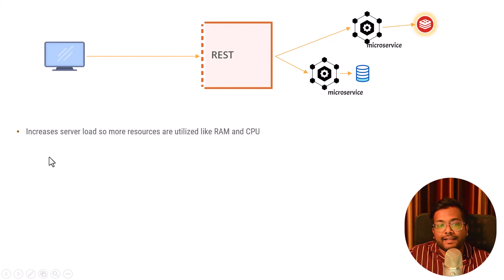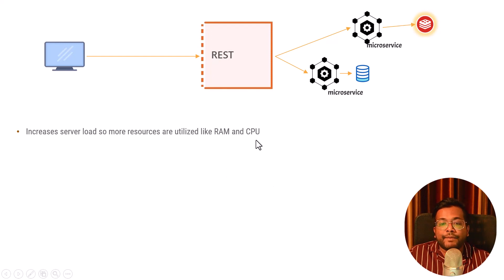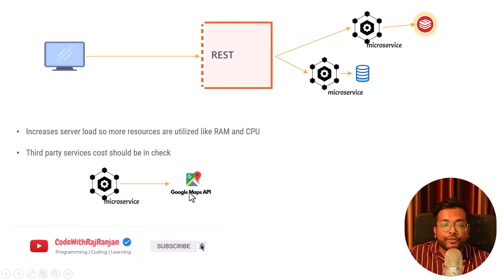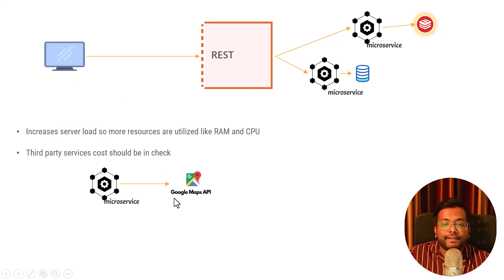If the request load is large, it increases server load, so more resources like RAM and CPU are utilized. On AWS or Google Compute Engine, this can increase RAM and CPU usage and ultimately increase your billing. Third-party service costs should also be kept in check. Consider Uber: their microservice calls the Google Maps API to find where a driver is and book a cab. Google Maps APIs are chargeable beyond a certain throughput, so more requests means higher billing for Uber. We should keep a check on third-party services by rate limiting our APIs.